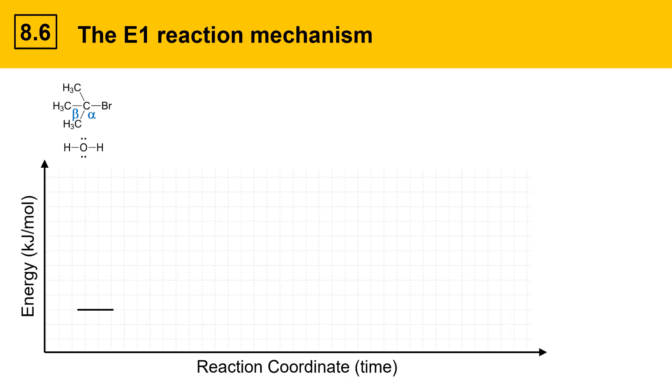In the first step, the carbocation forms. We can describe the energy of these intermediates with a line at this level, indicating they're higher in energy. As the leaving group leaves and it transitions to intermediates, we can draw the changes in energy that occur at that point. This reaction has a transition state that exists at the top of this hump, and the carbocation is represented by the energy of this line.